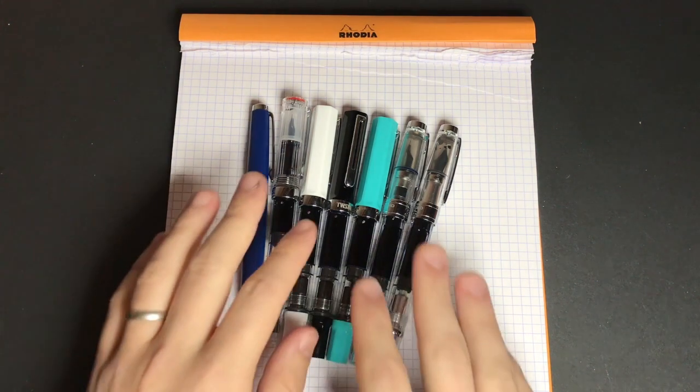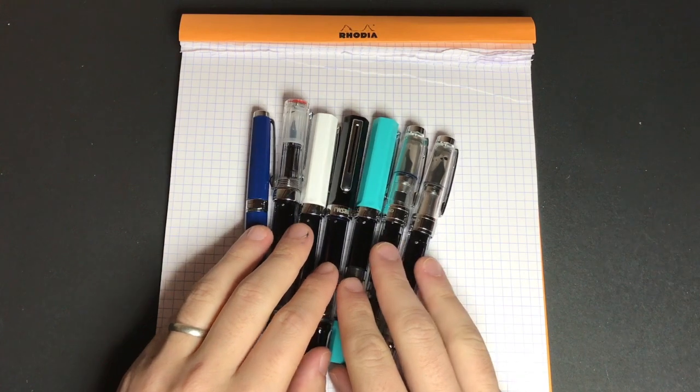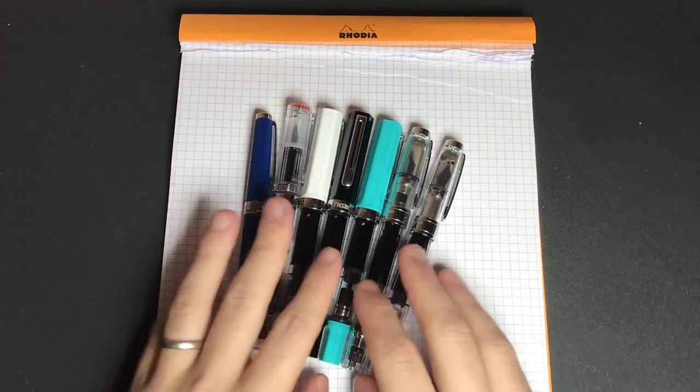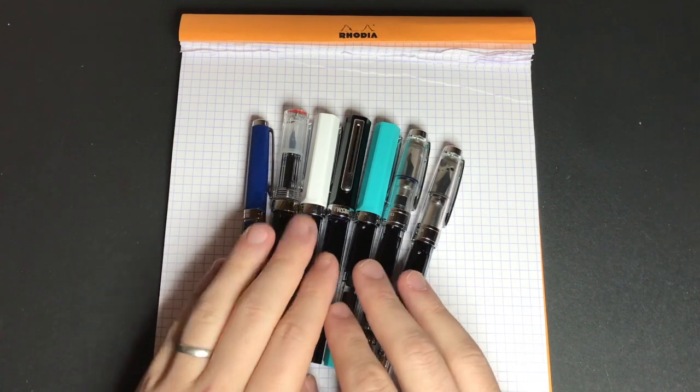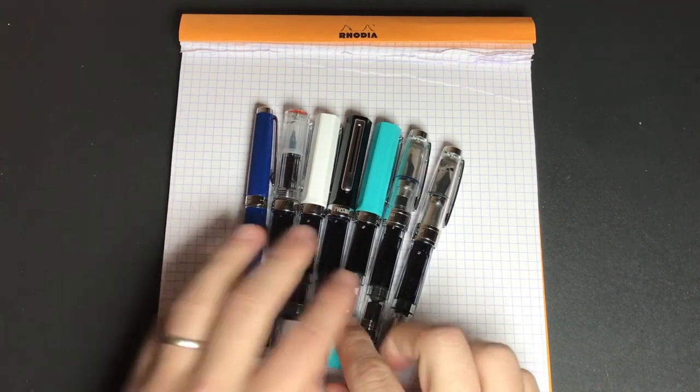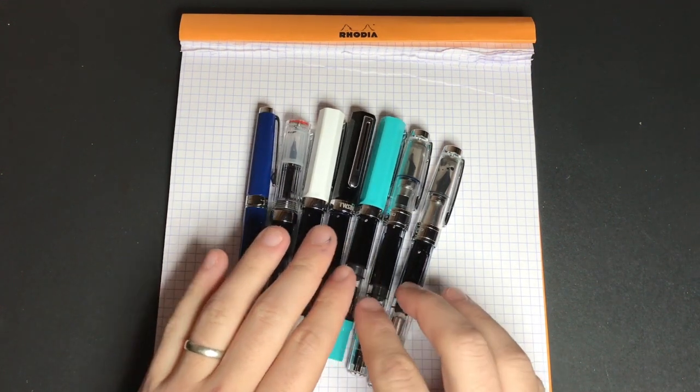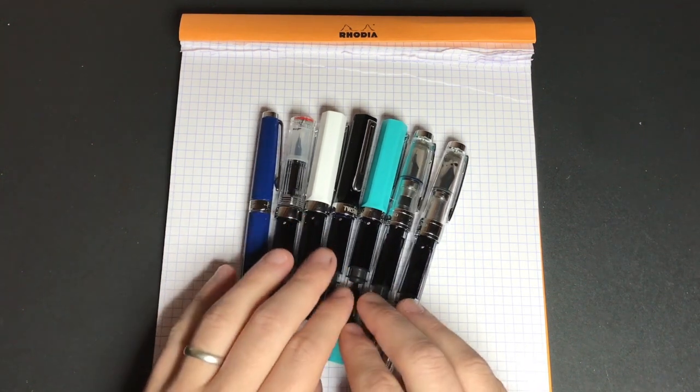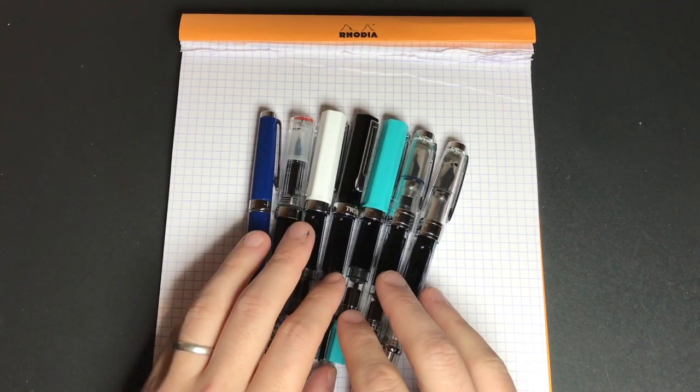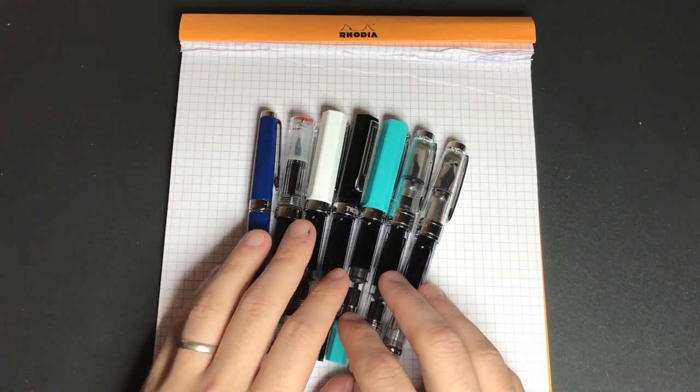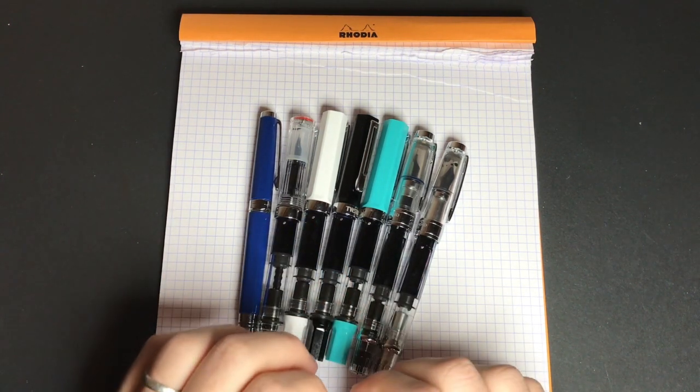So what I thought I'd do today is a quick writing sample with a range of my TWSBI pens. Now this is just a few of the ones that I've got but I've got pens that range from extra fine through to 1.1, all in the number 5 nib size and then a medium and a broad in the number 6. I've inked them all with the same ink, Lamy Black, so we can hopefully get a pretty fair representation of what these pens look like on the page.